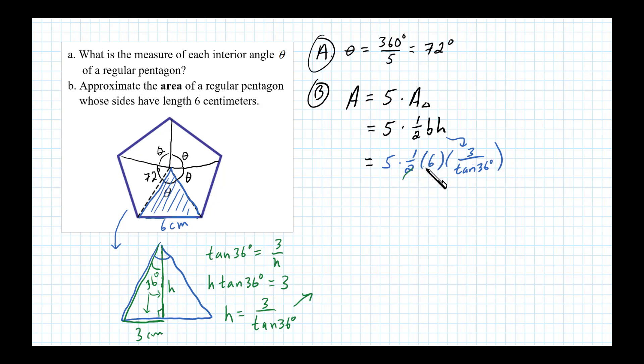Simplifying this, we can divide 6 by 2, we get a 3 there. So the area exactly equals 5 times 3 times 3, which is 45. So 45 over tangent of 36 degrees, and that'll be measured in centimeters squared or square centimeters.